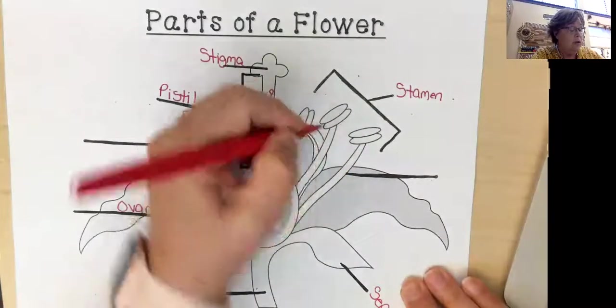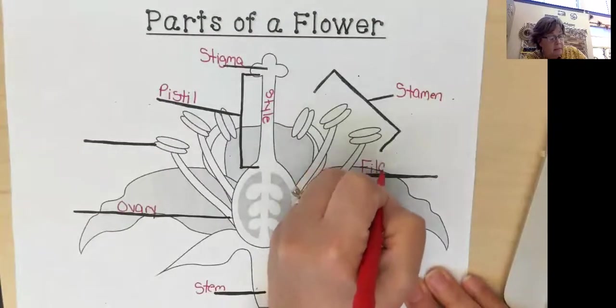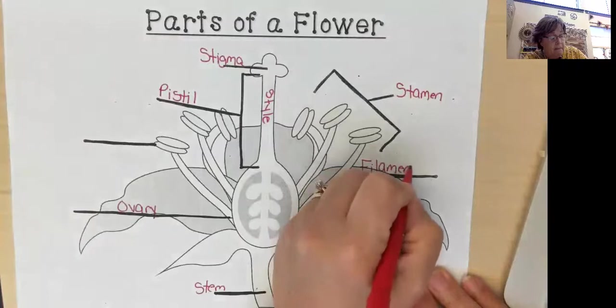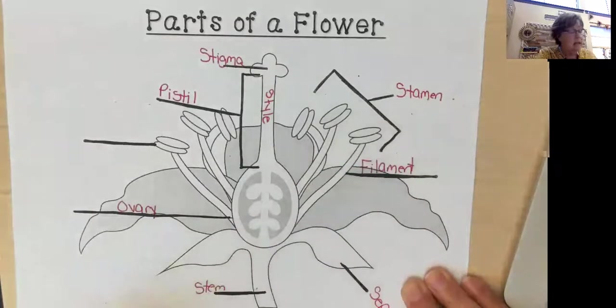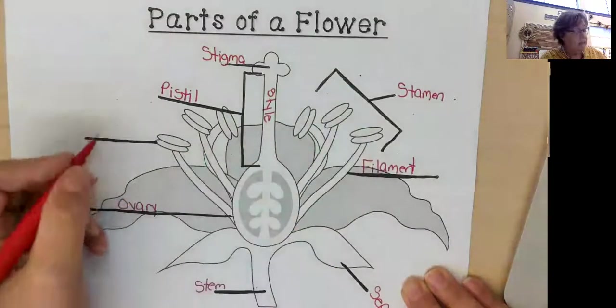Now these long skinny tubes are called the filament. And at the tip of each filament, we have the anthers.